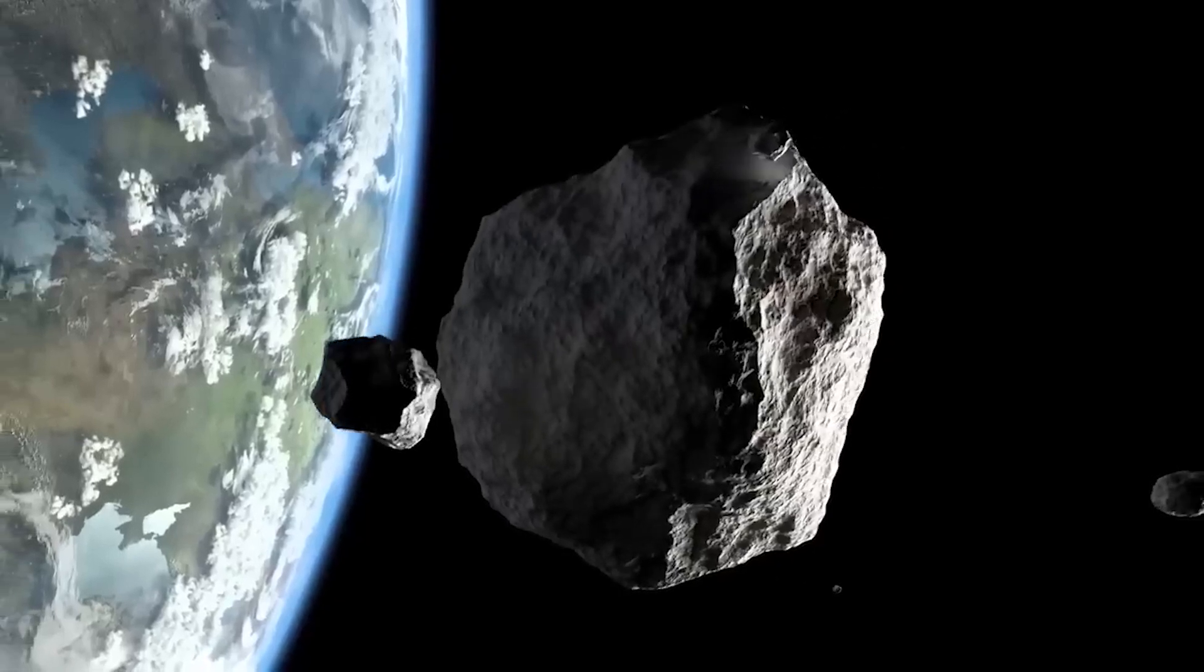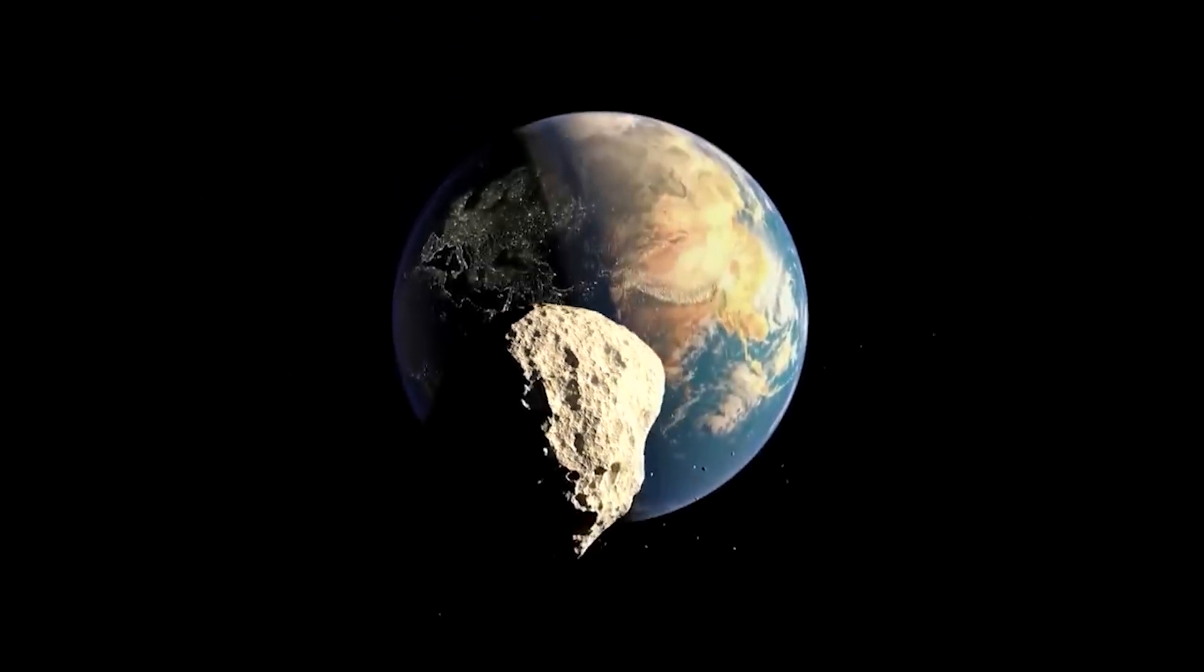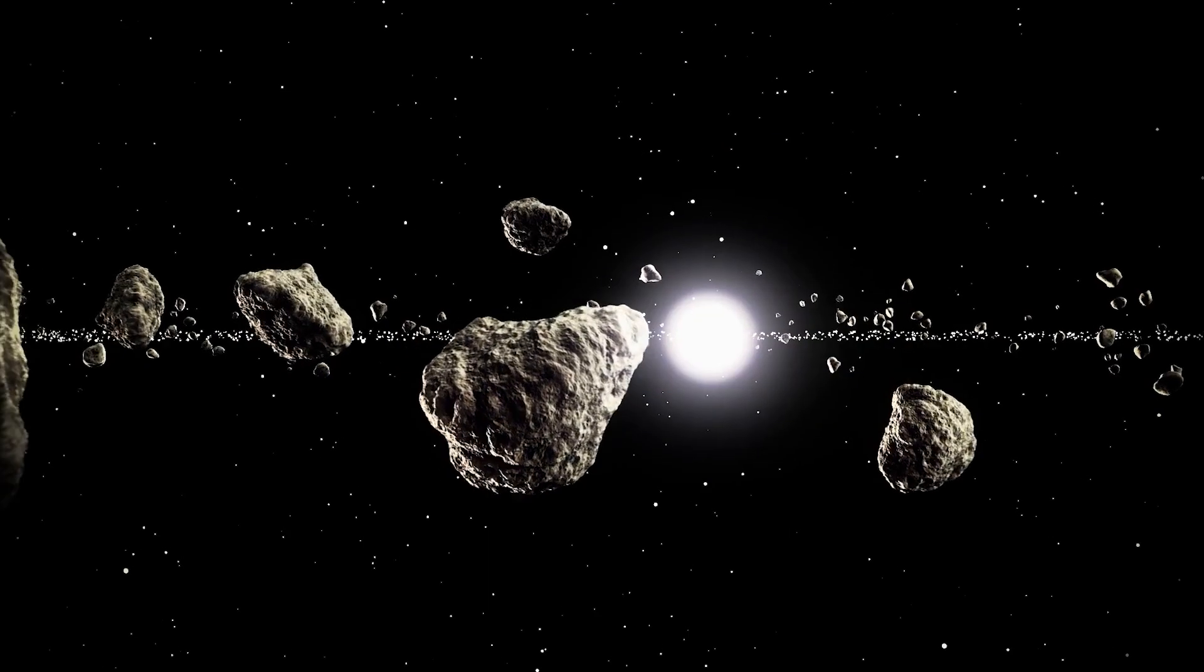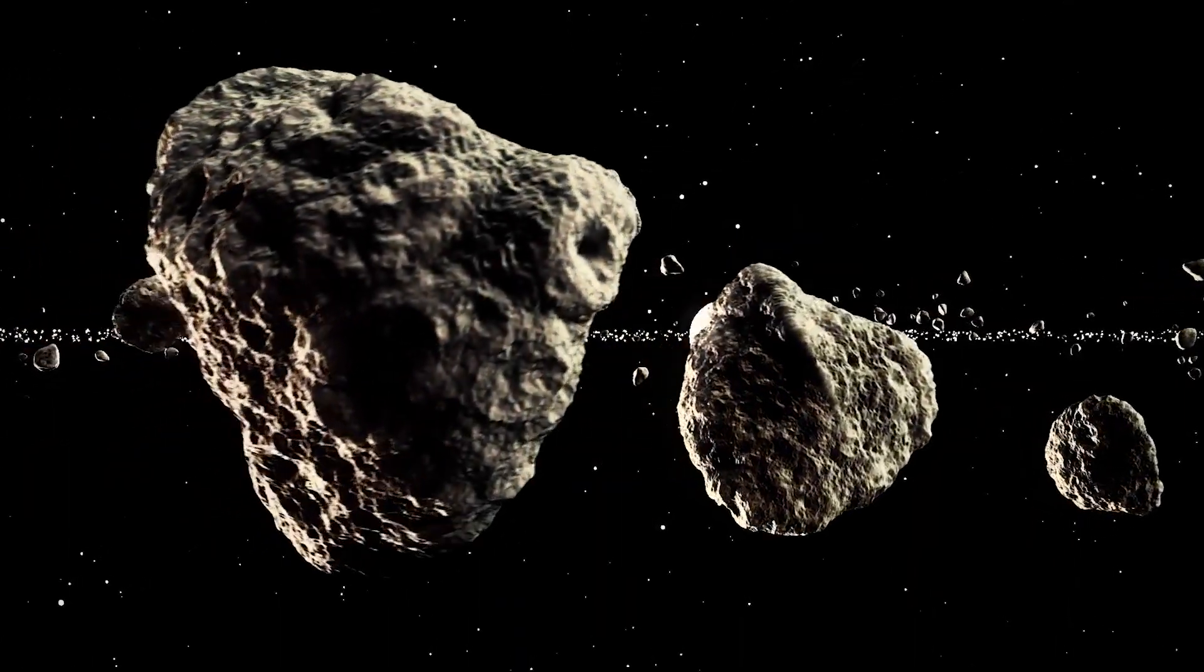There are different types of asteroids based on what they're made of. Carbonaceous asteroids are common and rich in carbon, possibly holding clues about the origins of life. Silicate asteroids are rocky, like Earth's crust, and often have metal deposits.